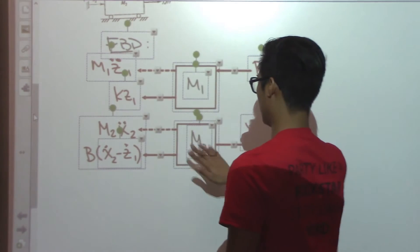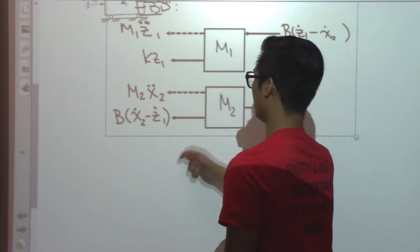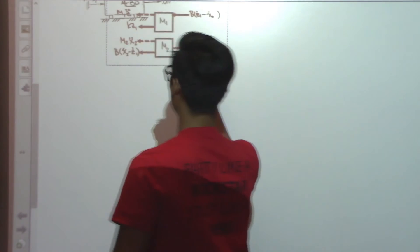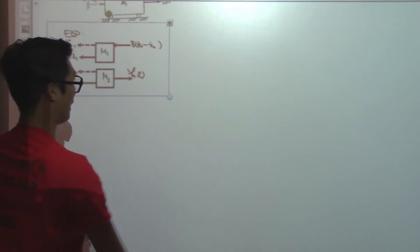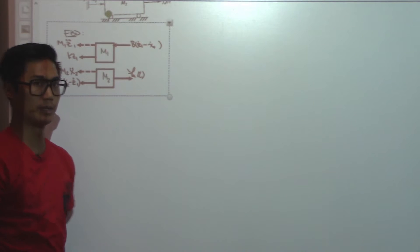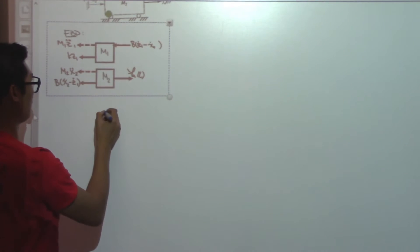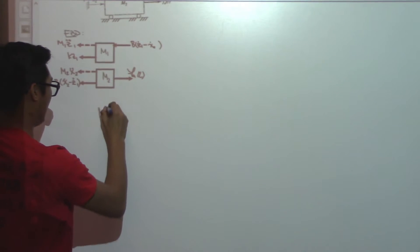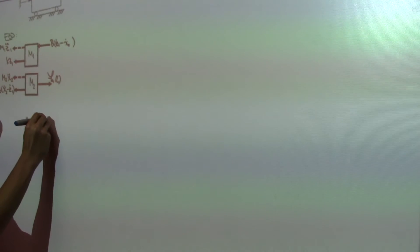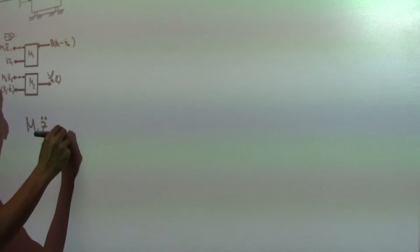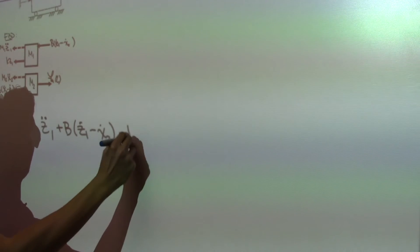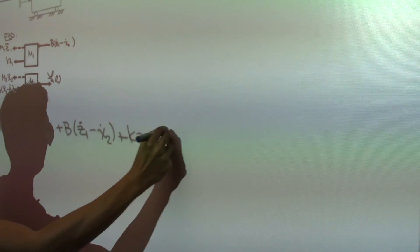So what we want to do next is we want to develop the set of modeling equations based off these free body diagrams. And basically what we're going to do is sum the forces in the X direction. So if I do sum of the forces, we'll have M1 Z double dot 1 plus B(Z dot 1 minus X dot 2) plus KZ1 is equal to 0. So this is for mass 1.